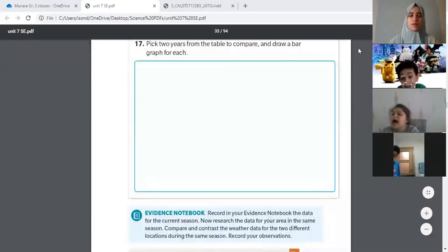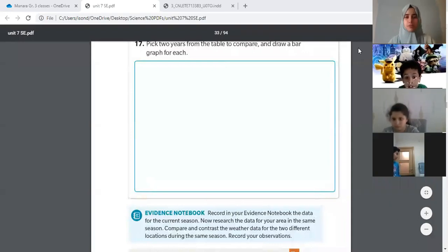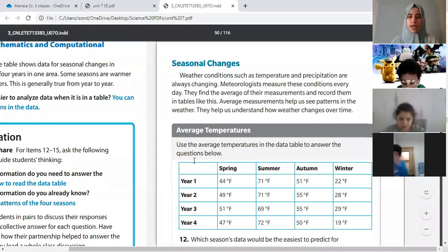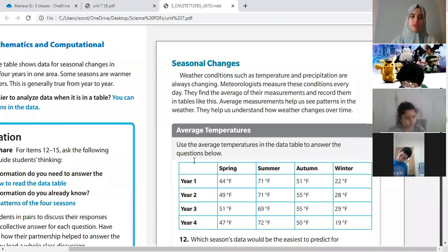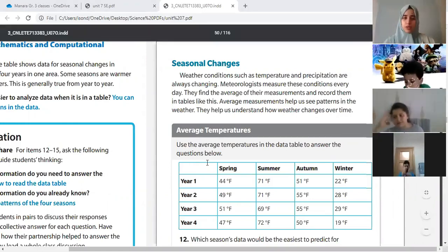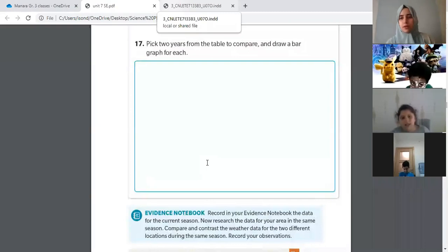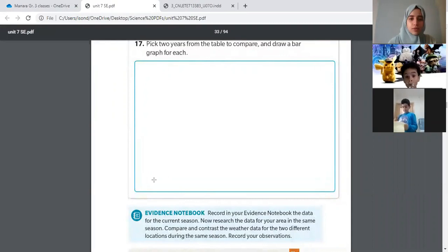So on page 431 we're going to start with a bar graph. On the previous page we had a table that we analyzed yesterday. It had four years and different temperatures every season, so we're going to choose two years and then compare. We're going to choose two years from the table, and they're asking us in question 17 to choose two years and then compare the temperatures of each season. I'm going to draw first the arrows.